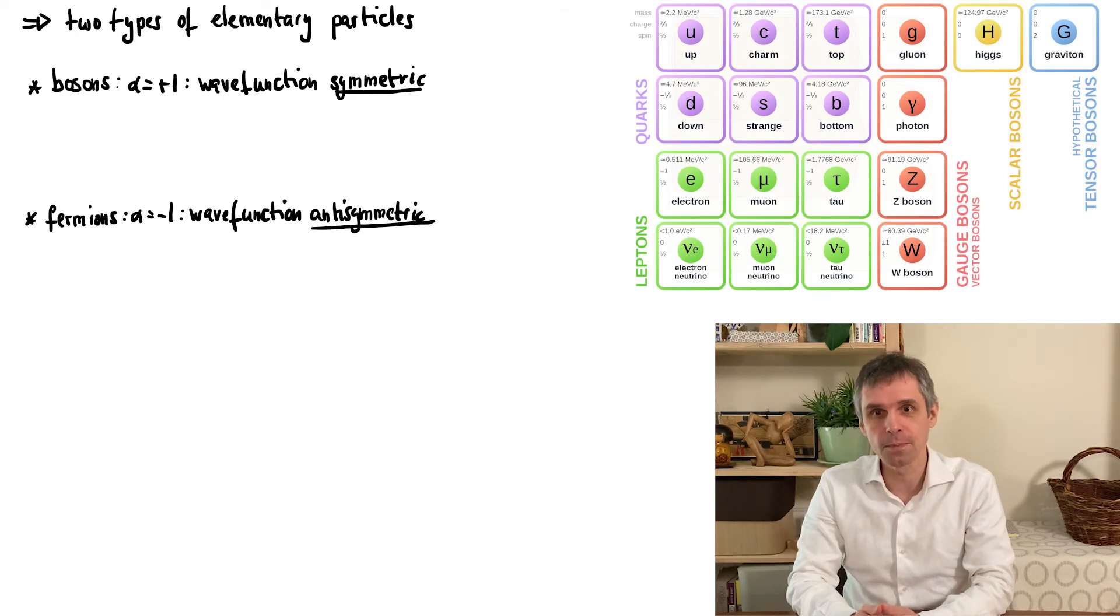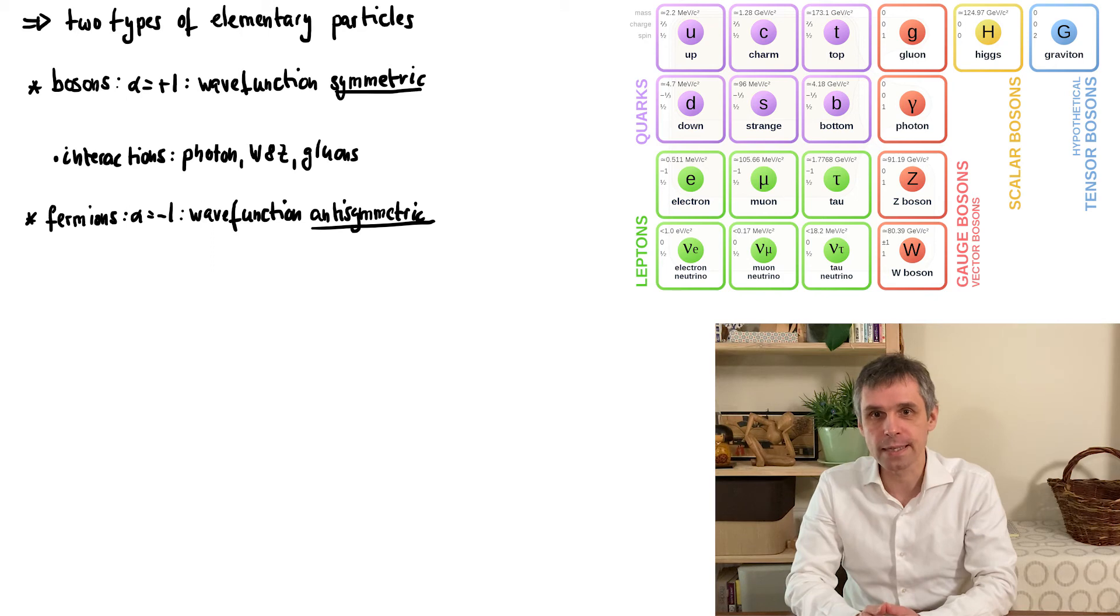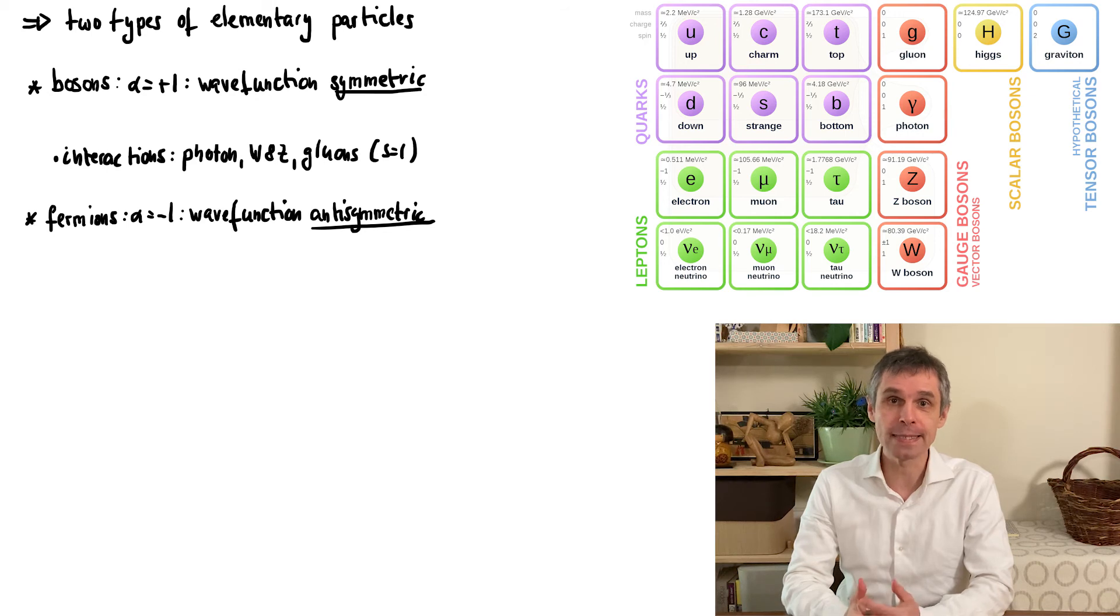For instance, in the standard model of elementary particles, bosons appear as mediators of fundamental interactions. This comprises the photon which is involved in electromagnetic interactions, the W and Z bosons which are involved in weak interactions, and the gluons that mediate strong interactions. These are the so-called vector bosons, as they have a spin of size s equal to 1. The development of a quantized version of gravity suggests that this would involve a so-called tensor boson, with spin 2, and we call this the graviton.